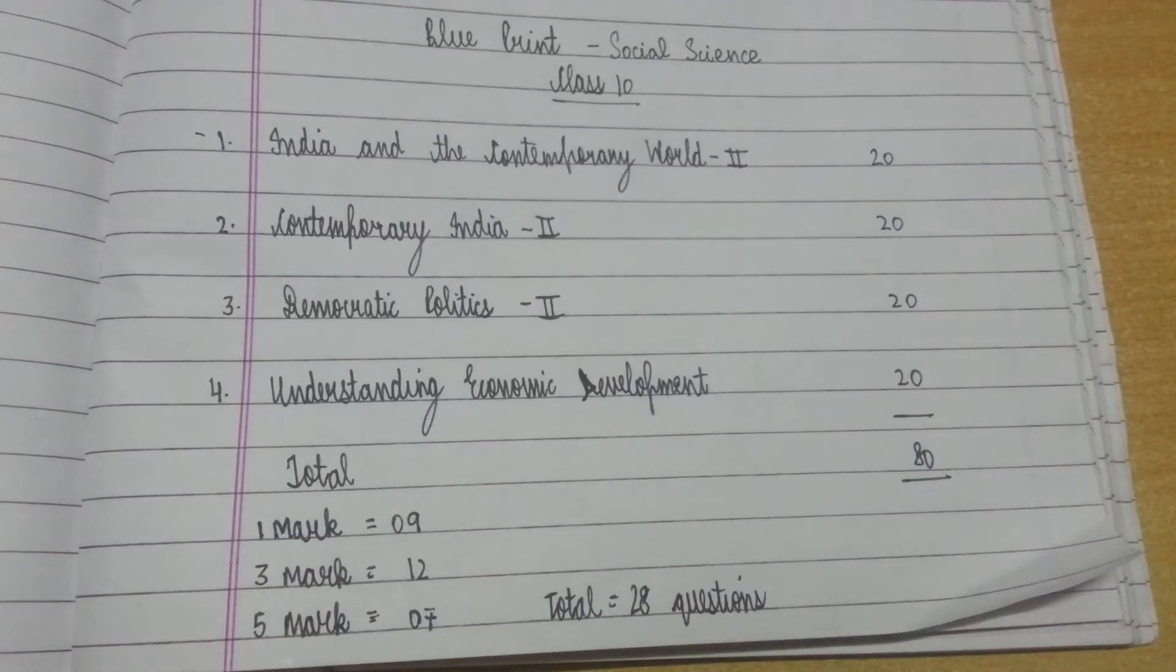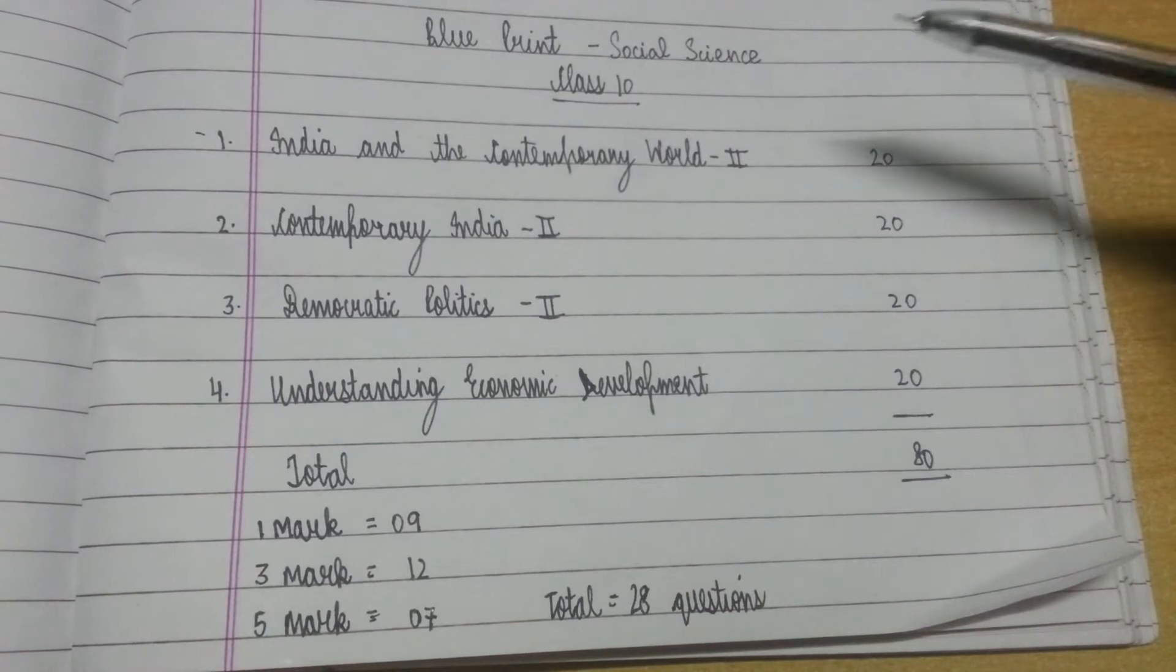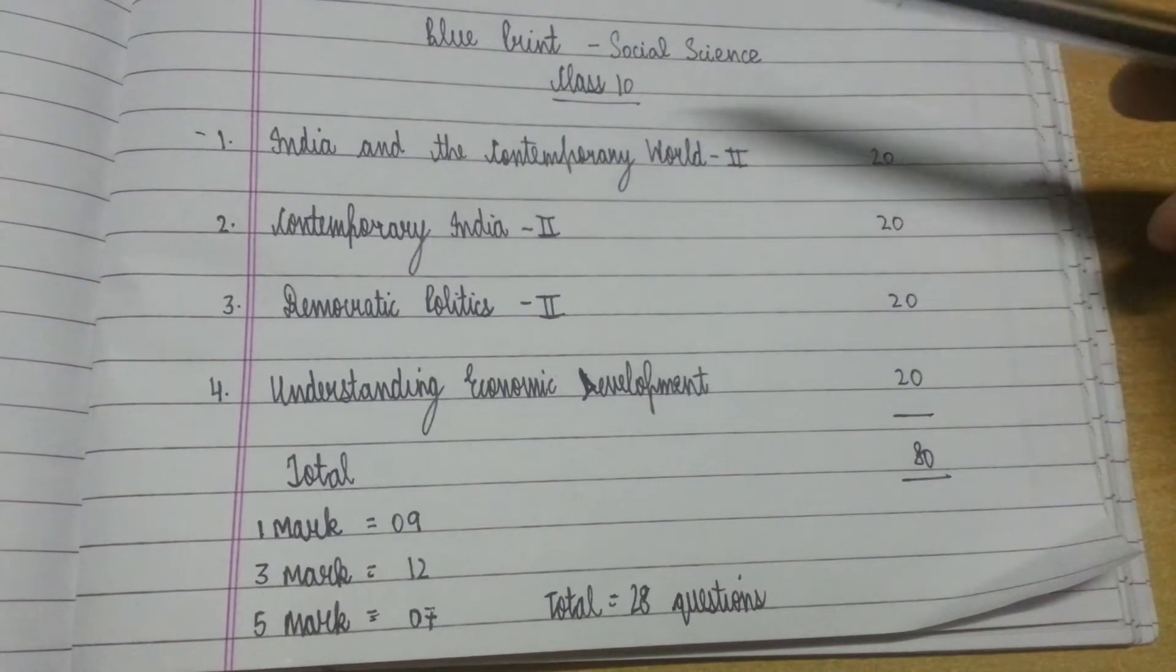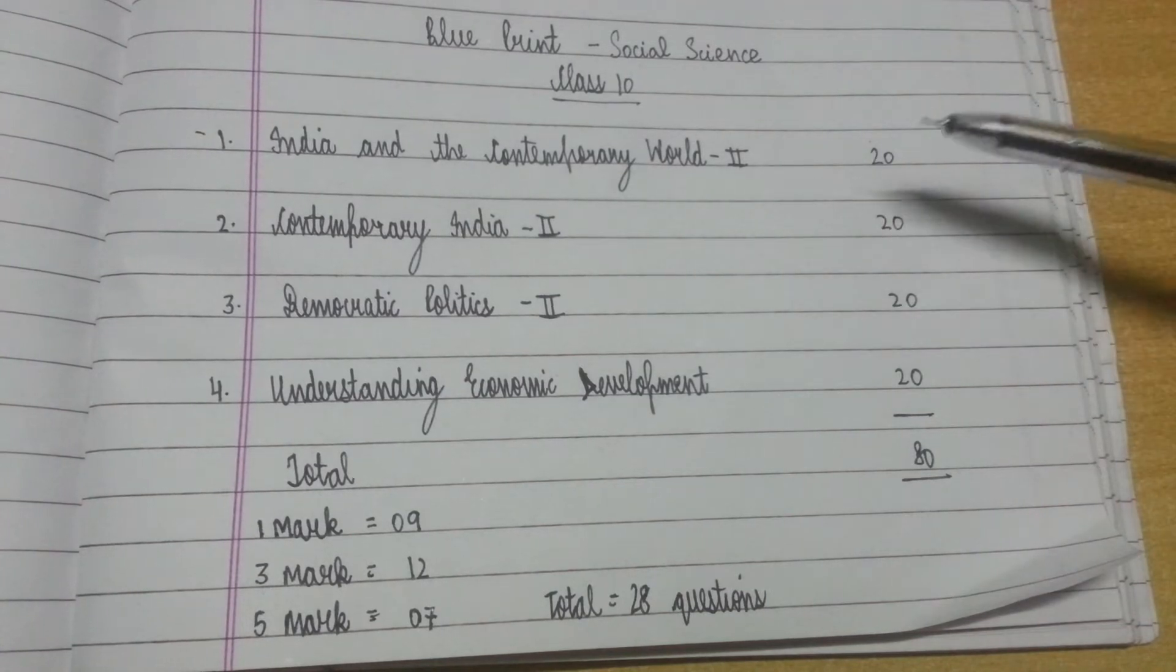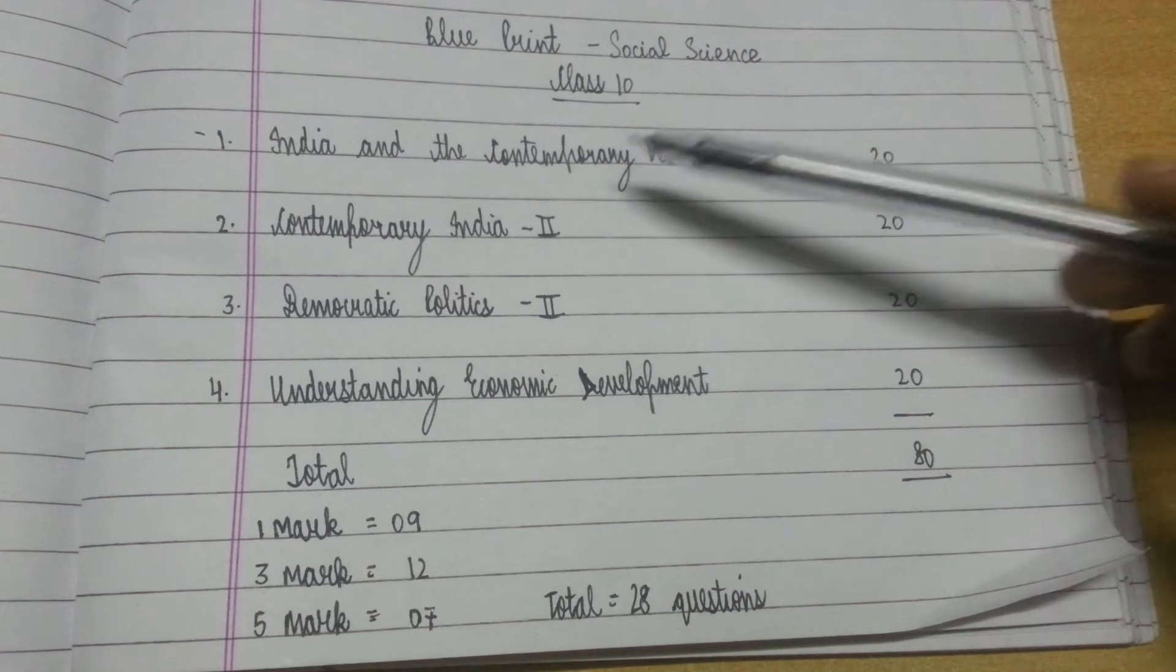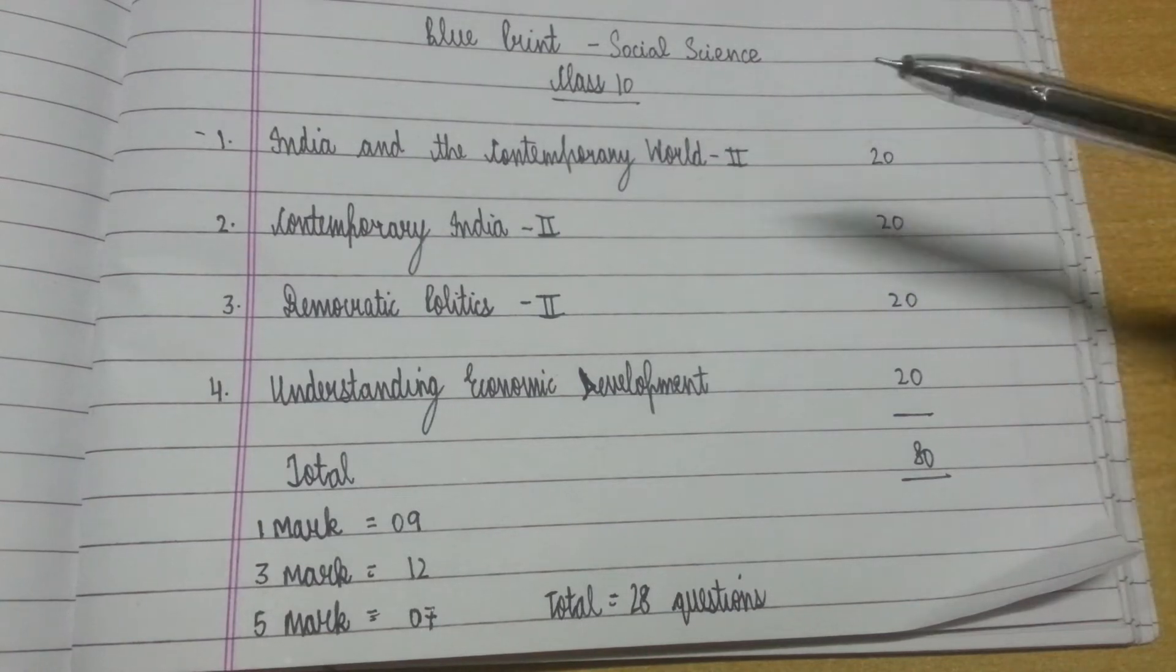Hey everyone, welcome to my channel Steady Junction. In this video we are going to discuss the blueprint of Social Science for Class 10 CBSE 2019 examination. From India and the Contemporary World Part 2, you are going to get questions for 20 marks.